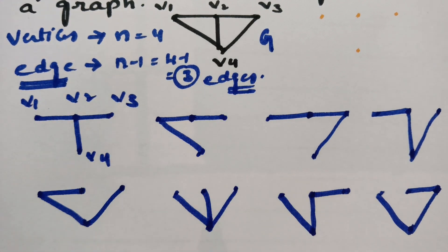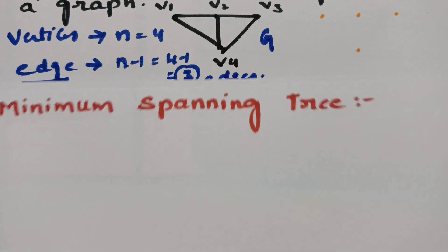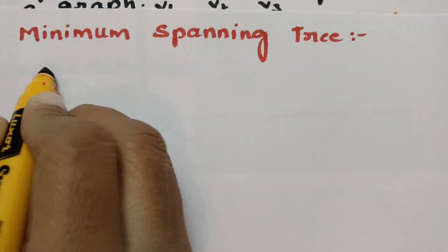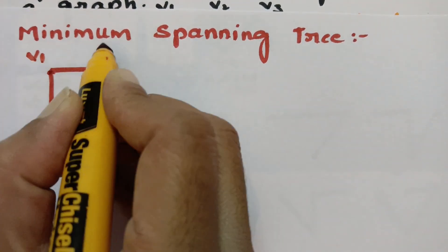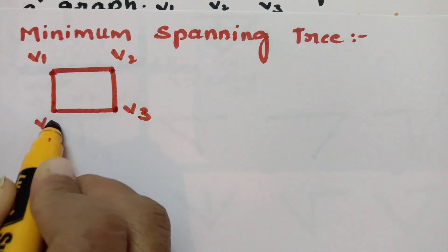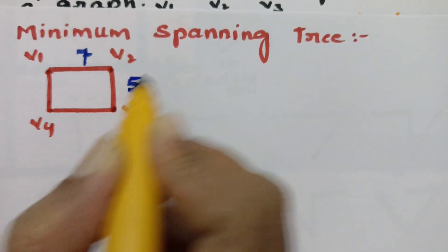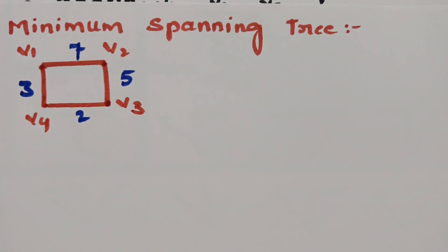Now, the next topic is the minimum spanning tree. If there is a weighted graph with four vertices — V1, V2, V3, and V4 — we first need to draw all the subgraphs. Since n equals 4, we maintain 4 vertices and n minus 1 equals 3 edges per spanning tree, with no loops or cycles.